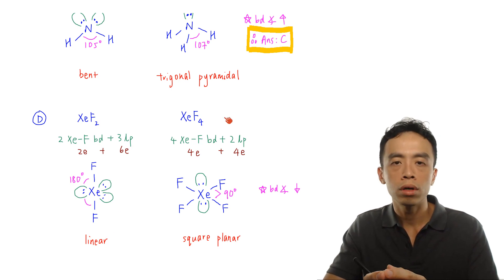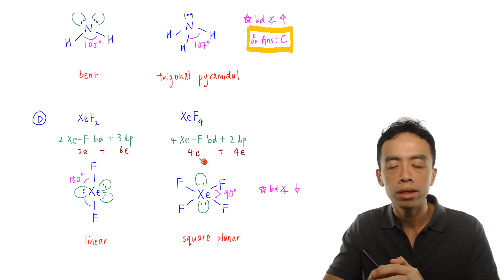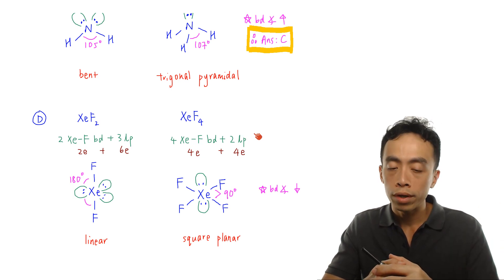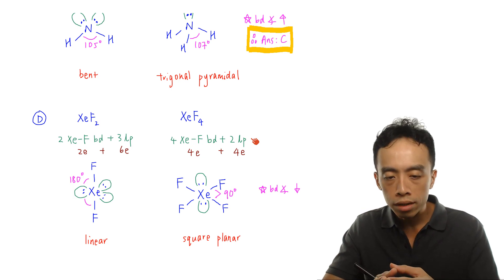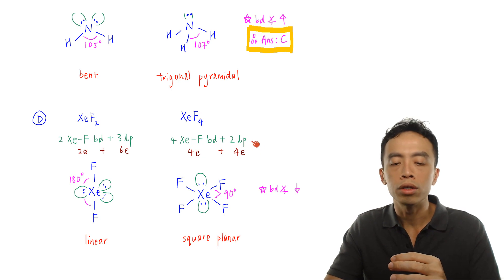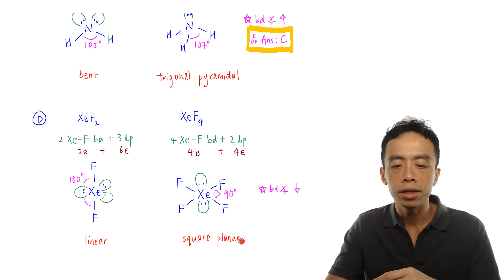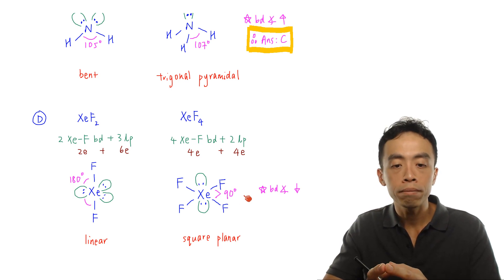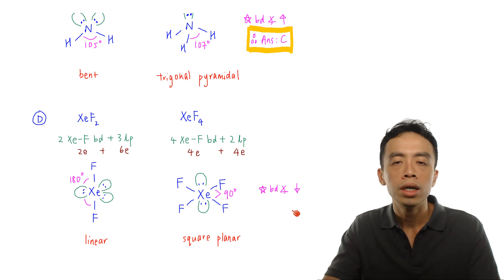For XeF4, there are four Xe–F bonds using four electrons from xenon, leaving four electrons — meaning two lone pairs. So XeF4 has four bond pairs and two lone pairs, giving six electron pairs; the basic shape is octahedral. The two lone pairs point directly opposite each other to minimize repulsion, and the remaining four fluorines occupy the remaining positions. The shape is square planar and the bond angle with respect to xenon is 90 degrees. So there is a decrease in the bond angle from 180 to 90 degrees, and option D is not the answer.